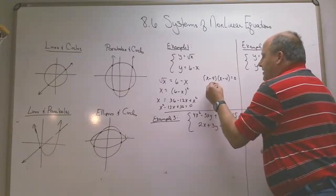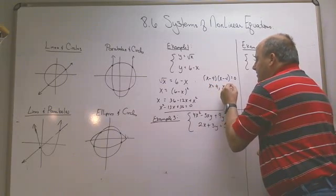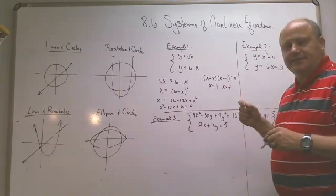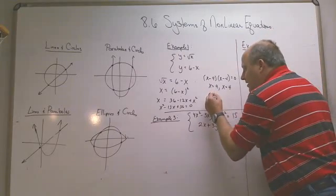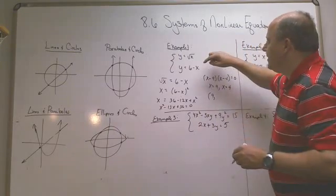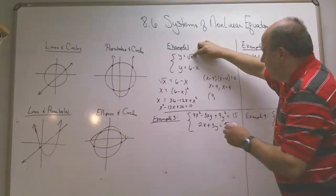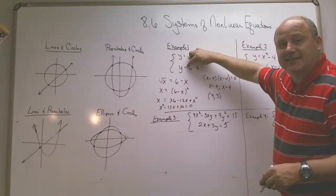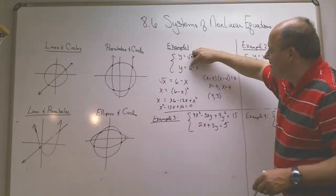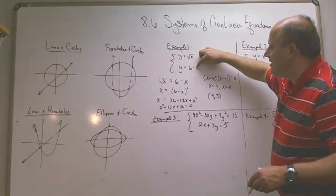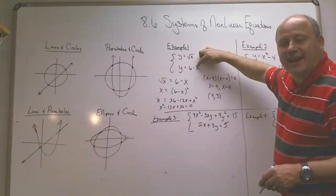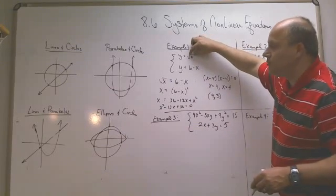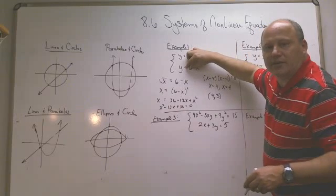So x equals 9 and x equals 4. Now if x was 9, you can find out what the y-coordinate is. The square root of 9 is 3, so the y would be 3. So 9, 3 should work for the other one. Let's see if it does. If we put 9 in, 6 minus 9 is not 3. It's actually negative 3. And that means even though 9, 3 appears to work for this one and it does, it does not work for the other one.